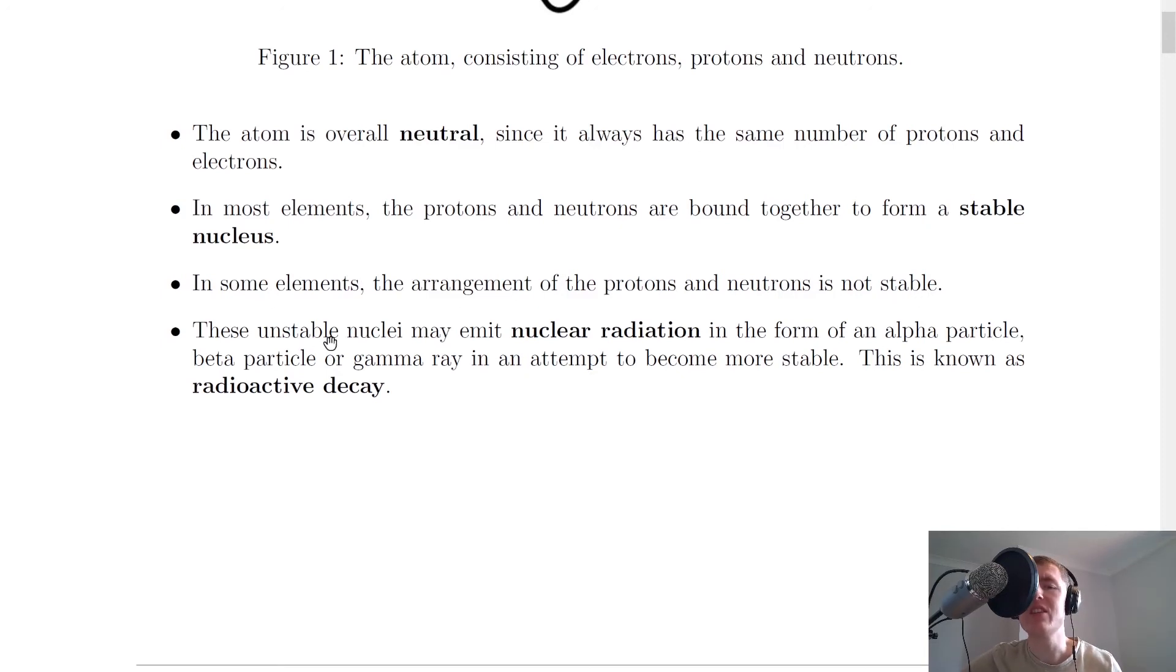Well it says that these unstable nuclei may emit nuclear radiation in the form of an alpha particle, a beta particle or a gamma ray in an attempt to become more stable. This is known as radioactive decay.